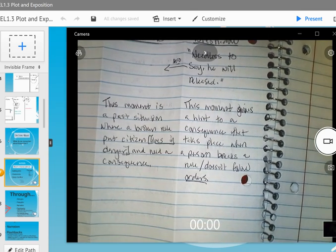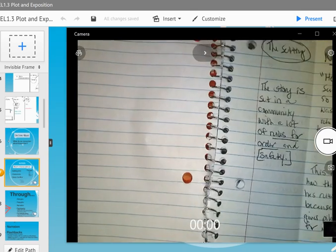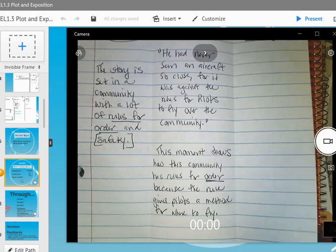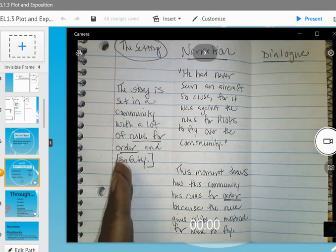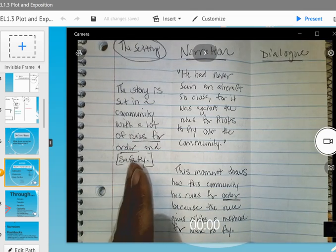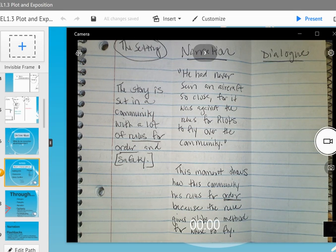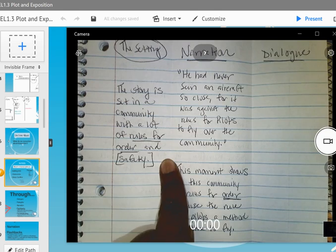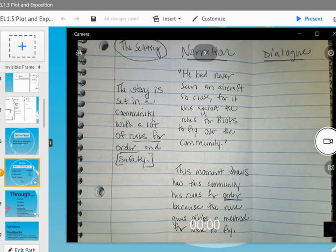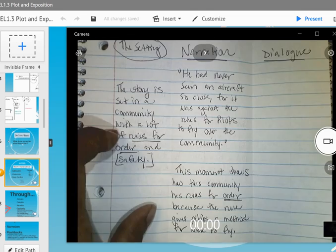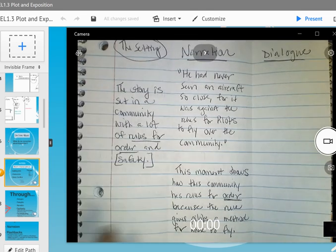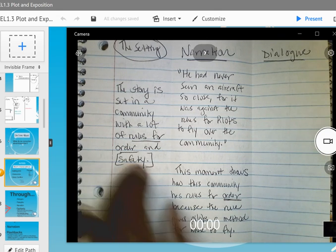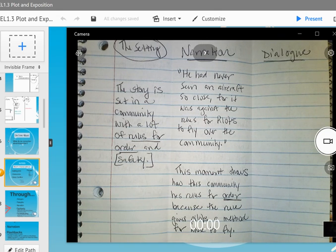Going back, you already see I have some of this stuff filled in. The first thing you do is put your focus and do your summary. Here I'm giving you setting. I'm saying that the story is set in a community with a lot of rules for order and safety. You always want to think about what is the key phrase you're trying to support when you get to your evidence. In this case, I want to show that there are rules for order and rules for safety. I don't need to support the story or the community. I need to support how these rules give order and safety.